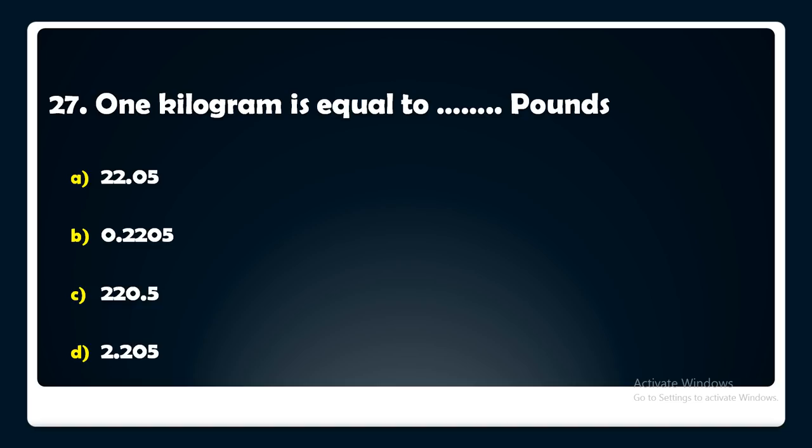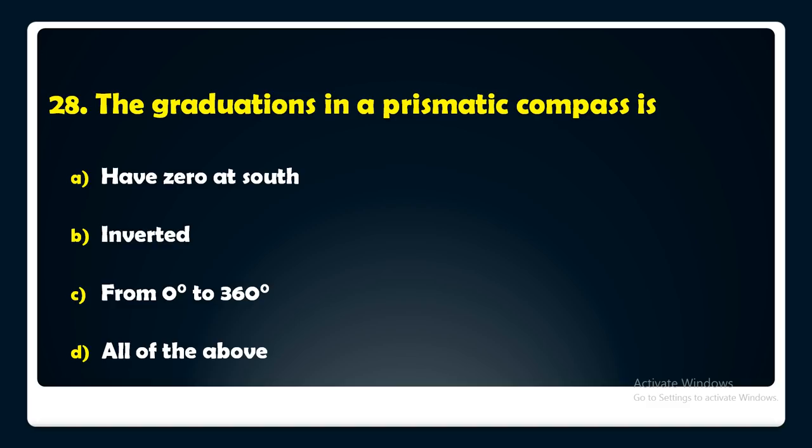The graduations in a prismatic compass — have 0 at south, are inverted from 0 to 360 degrees, or all of the above? The answer is: the graduations in a prismatic compass satisfy all of the above.